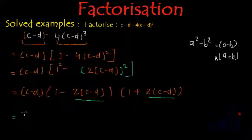this can be written as (c-d) multiplied by (1 - 2c), and this minus multiplied by minus d will give us +2d,